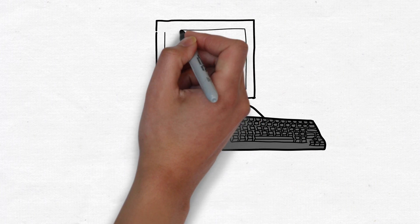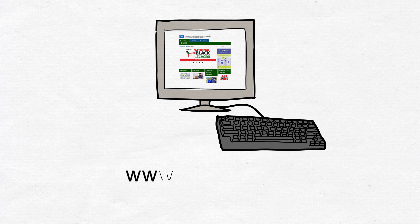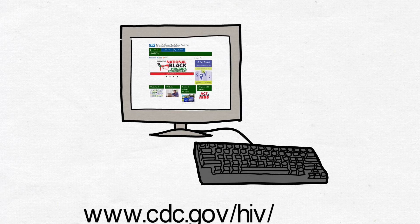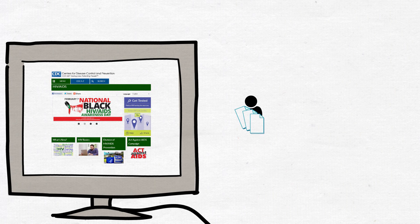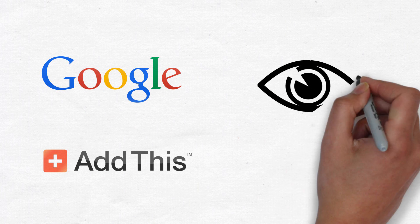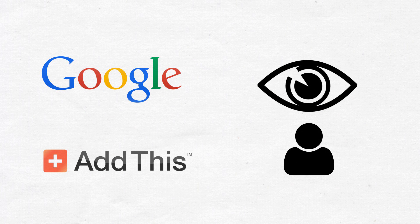For example, the CDC web page for HIV AIDS has the address cdc.gov slash HIV. Visiting this page sends user information to both Google and AddThis, allowing these companies to see that users visiting the page have an interest in HIV.